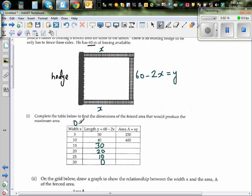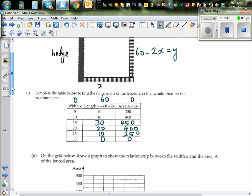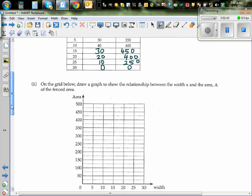If your width is 0, your area is going to be 0. If it's 5, 5 times 50 is 250. 10 times 40 is 400. 15 times 30 is 450. 20 times 20 is 400. 25 times 10 is 250. And 30 times 0 is 0. Now we want to plot these points.